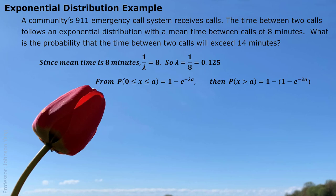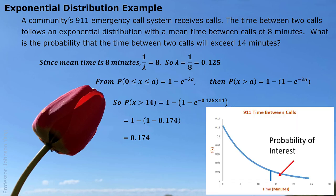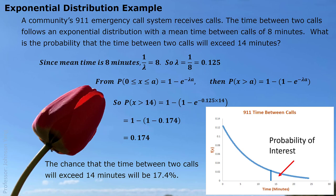We put our formula in and replace the values. We are looking for x greater than 14. The formula gives the probability of being less than a certain number from 0, so we use 1 minus that quantity for the right-side probability. The calculation gives 1 − (1 − e^(−0.125 × 14)) = e^(−1.75) ≈ 0.174. The probability is shown as the small tail area on the right side of the curve. This means there is a 17.4% chance that the time between two calls will exceed 14 minutes — or equivalently, after answering one call, there is a 17.4% chance of waiting more than 14 minutes for the next call.